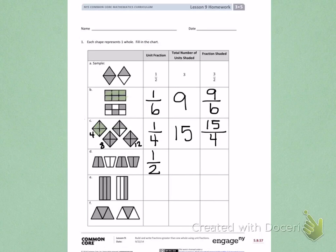Next, I will count the parts that are shaded. I see 2, 4, 6. 6 parts are shaded. So as my numerator, I'm going to put a 6. My denominator shows my units. My units are halves, so my fraction shaded is 6 halves.